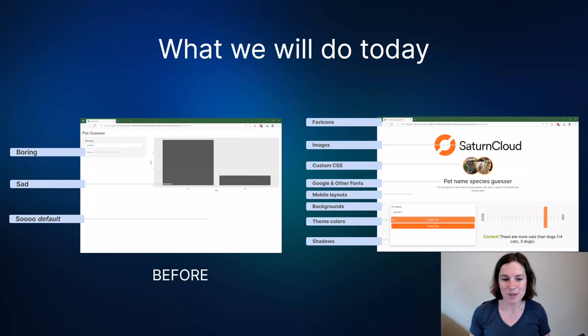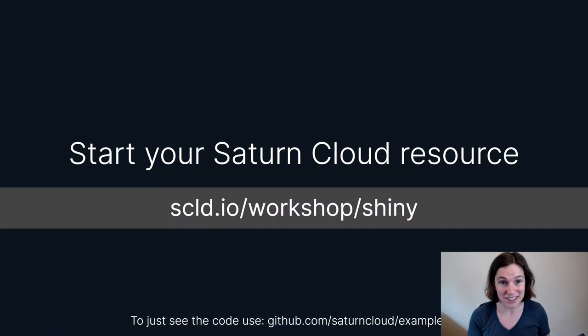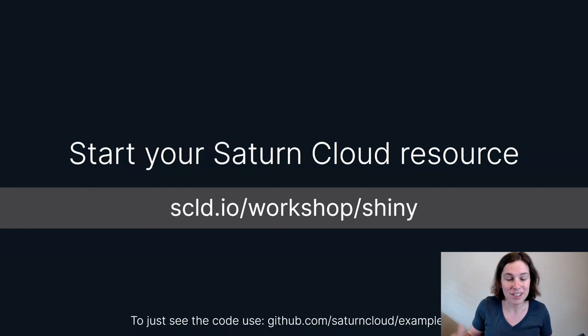Before I start the live demo, I'm going to talk through some of the techniques we're going to use. But first, we all need to start our Saturn Cloud resources. Saturn Cloud is a cloud data science platform, so you can do data science on the cloud. A nice feature is we can all use Saturn Cloud as our Shiny interface, so you don't have to have Shiny installed on your laptop or anything like that — we're just going to use this link.